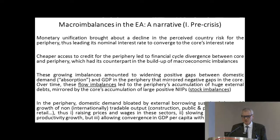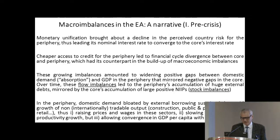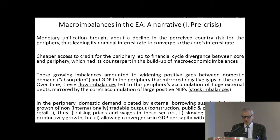This cheaper access to credit led to financial cycle divergence between core and periphery, which had its counterpart in the buildup of macroeconomic imbalances. These growing imbalances amounted to widening positive gaps between domestic demand — or absorption — and GDP in the periphery, mirroring negative gaps in the so-called core. Over time, these flowing imbalances led to the periphery's accumulation of huge external debts, mirrored by the core's accumulation of large positive net international investment positions — what are called stock imbalances.